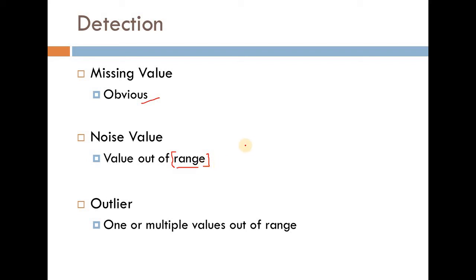So it means first we need to define what a range is and that is going to give us the legitimate range of values for that feature. Any value that falls outside of that range on either side is going to be considered as a noise value.